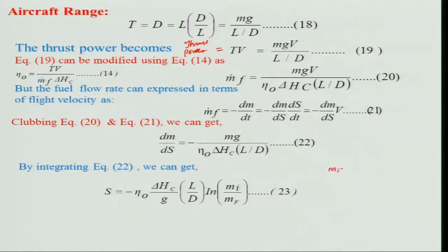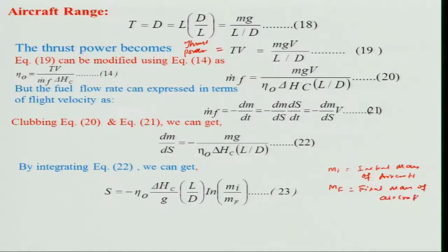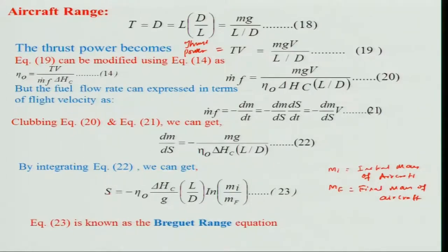Here m_i is the initial mass of the aircraft and m_f is the final mass. This range equation is known as the Breguet range equation, which some of you may already know. The range depends on: overall efficiency η₀, heat of combustion ΔQ_c, and lift-to-drag ratio L/D.